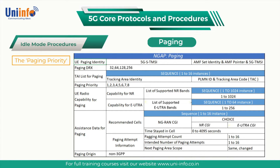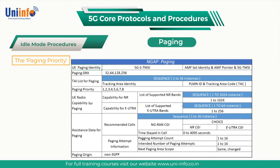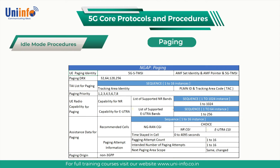indicated by the SMF when requesting the AMF to page the UE. Specific services are likely to have high ARP priorities, such as Mission Critical Services and Multimedia Priority Services. The UE radio capability for paging provides the base station with information regarding